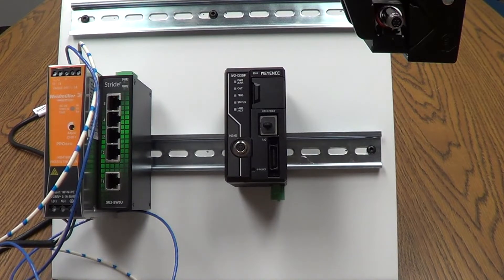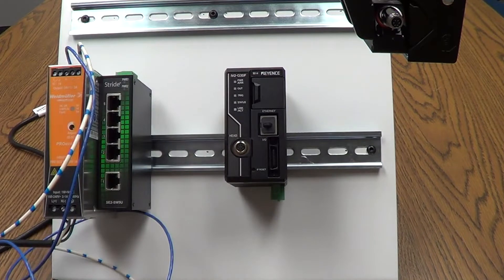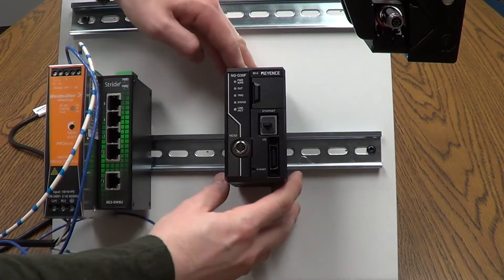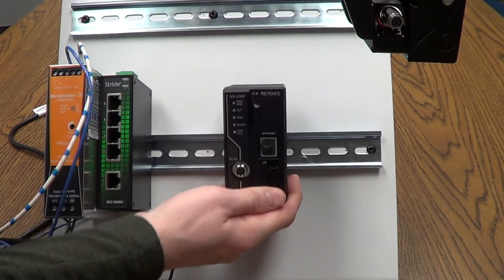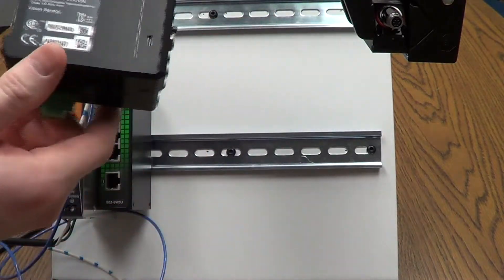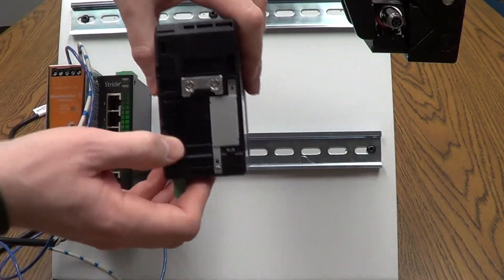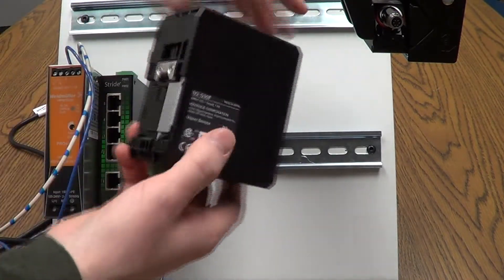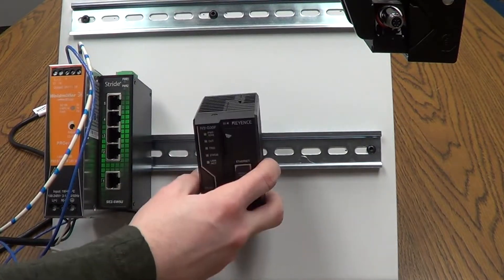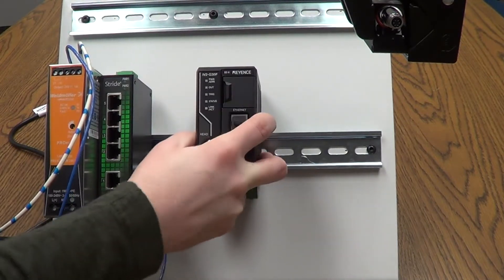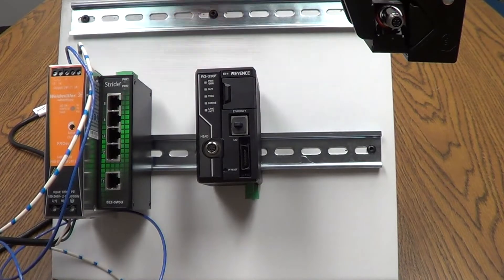For starters what we need to talk about a little bit is more of the controller itself and how it snaps on the DIN rail. So you would basically push up and then lift out if you need to take it off. There's these two little tabs on the back that are spring loaded. So when putting it on the DIN rail you would obviously go to the bottom, push up and then slide in until it's firmly locked in place.